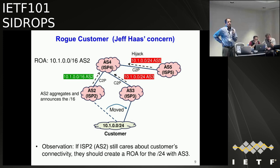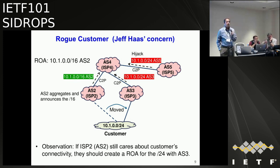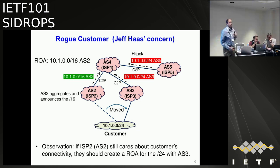Doug Montgomery: one quick point to John's point — you always have a problem if you're multi-homing and only creating ROAs for one path. At least in these kinds of examples, you need to be consistent. There is no more time — we're done. Next up. Talk about this in the mailing list, please.